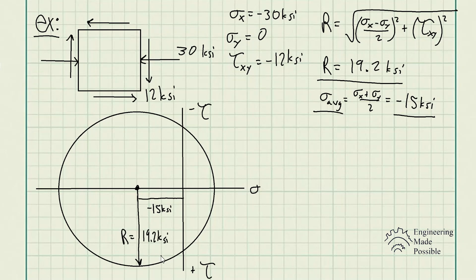We know that the radius of this is 19.2 KSI. So right off the bat, we already have what the maximum shear stress developed is. In this case, doing the graphical method, we're able to see maximum shear stress is in fact that radius. So maximum shear stress developed on this element when it's rotated is plus or minus 19.2 KSI, with the average normal stress being negative 15 KSI.